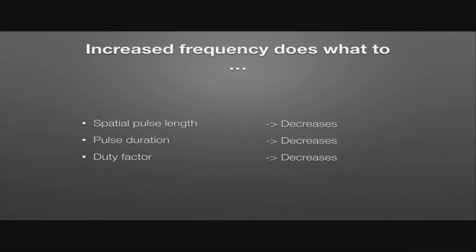With the spatial pulse length, increased frequency is going to decrease it. Because with increased frequency, we've got a shorter wavelength. If we've got three to five cycles per pulse, with a shorter wavelength, that means we're going to shorten the spatial pulse length. In terms of pulse duration, with increased frequency we reduce the period — the time for one wavelength — and again, if there are three to five cycles per pulse, the whole pulse duration will be decreased with increased frequency.